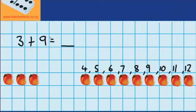So we know the answer to three plus nine must be twelve. But you can see we've had to do a lot of counting to get that answer.